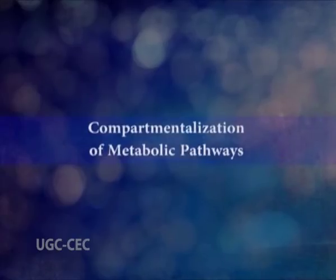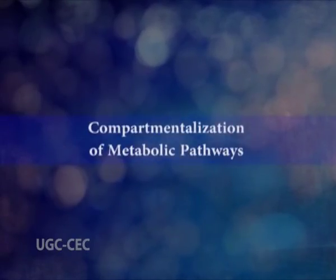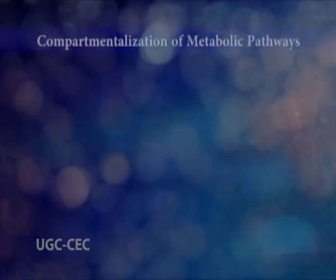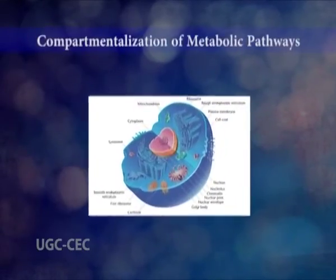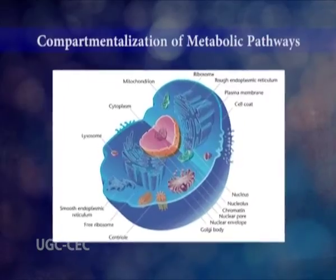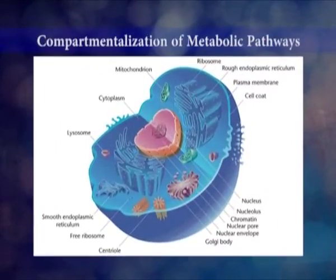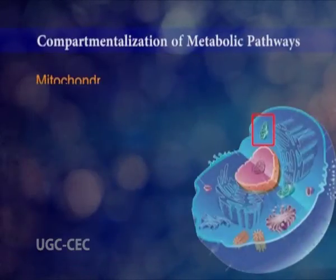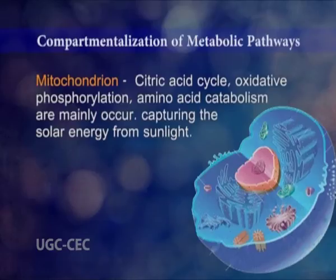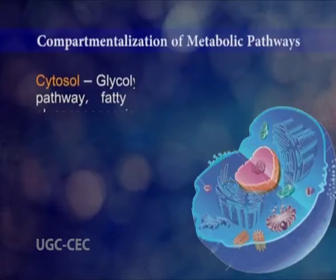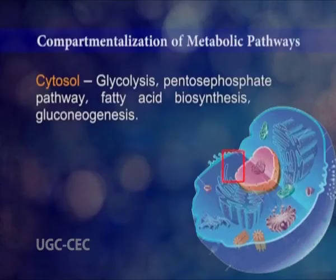Let's come to the compartmentalization of metabolic pathways. Eukaryotes use organelles to compartmentalize metabolic pathways, allowing different metabolic pathways to occur in specific locations. In the mitochondria, the citric acid cycle, oxidative phosphorylation, and amino acid catabolism mainly occur. And in the cytosol, glycolysis, pentose phosphate pathway, fatty acid biosynthesis, and gluconeogenesis occur.